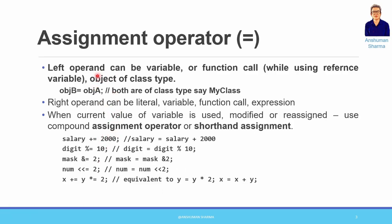The left-hand operand can be a variable, as we have seen. In C++, a function call can also serve as the left-hand operand — but this is only the case when you are using a reference variable. So if a function returns a reference variable, then a function call can appear on the left-hand side of the assignment.